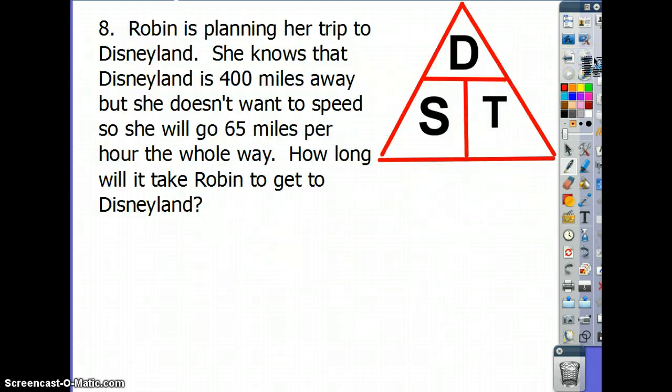Let's move on. Next couple of problems are the same, except for this one. Number 8, also a true story. Robin is my best friend. Robin is planning her trip to Disneyland. She knows that Disneyland is 400 miles away. 400 miles is a distance, I underline. But she doesn't want a speed, so she will go 65 miles per hour the whole way. 65 miles per hour is a speed. So I underline and circle. How long will it take Robin to get to Disneyland? How long is it time? So I'm going to cover up the time.